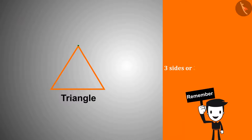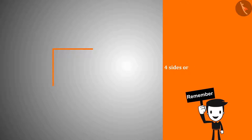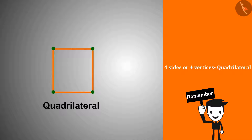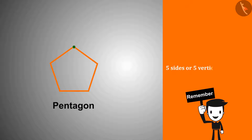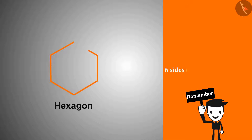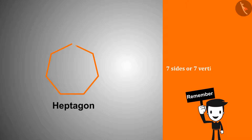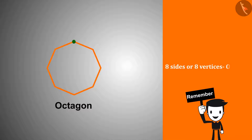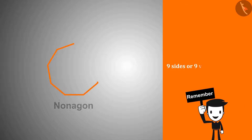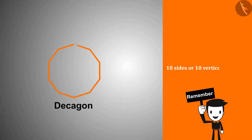On the basis of sides or vertices, we classify polygons. A shape with four sides is called a quadrilateral; five sides, a pentagon; six sides, a hexagon; seven sides, a heptagon; eight sides, an octagon; nine sides, a nonagon; and ten sides, a decagon.